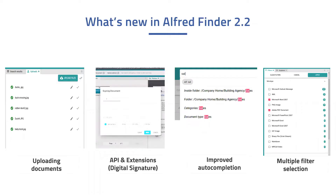Thanks, Kenneth. Hi, I'm Lars, and I'm the product owner of Finder. I will introduce you to some new features and enhancements that we made to Alfred Finder 2.2, our latest release. First up, we have added two completely new features in Finder: uploading documents and an extension API for developers. Next to these features, we improved the search bar autocomplete and search filters. Let's first talk about the document upload feature.